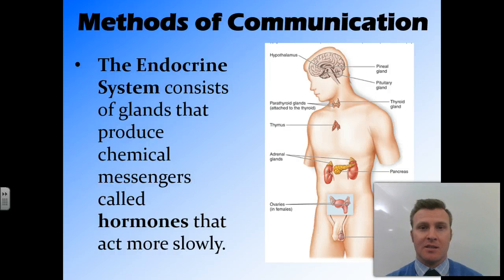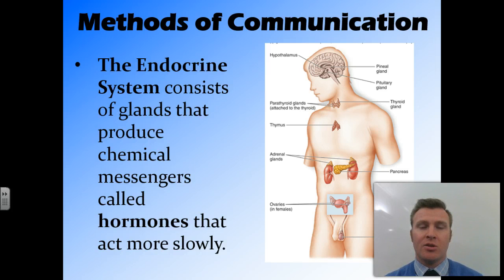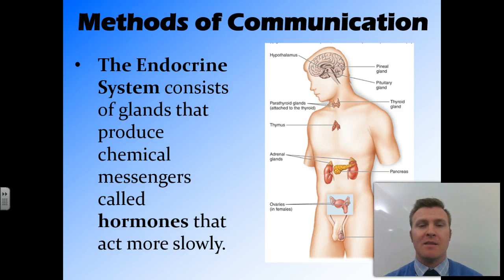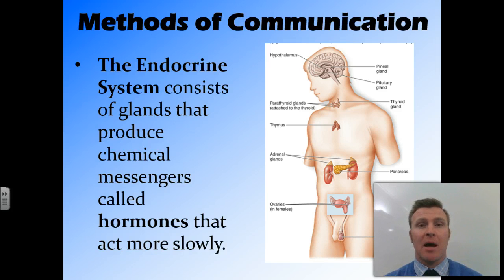The second system is the endocrine system. The endocrine system consists of a whole heap of different glands around the body that produce chemical signalers called hormones, and those hormones travel through the blood system to other organs that actually change something. These happen a bit slower, and depending on the hormone, it depends on how slow or fast it acts. Things like thyroid hormone act very, very slowly — it might be a matter of weeks before you notice a change — while other hormones like adrenaline can act within a couple of seconds.